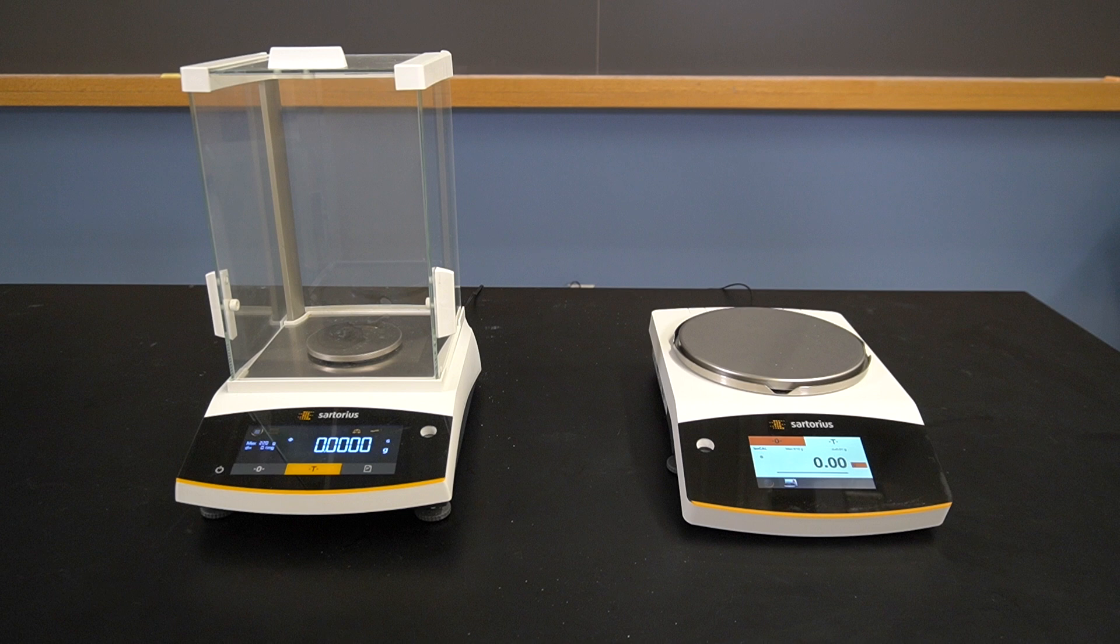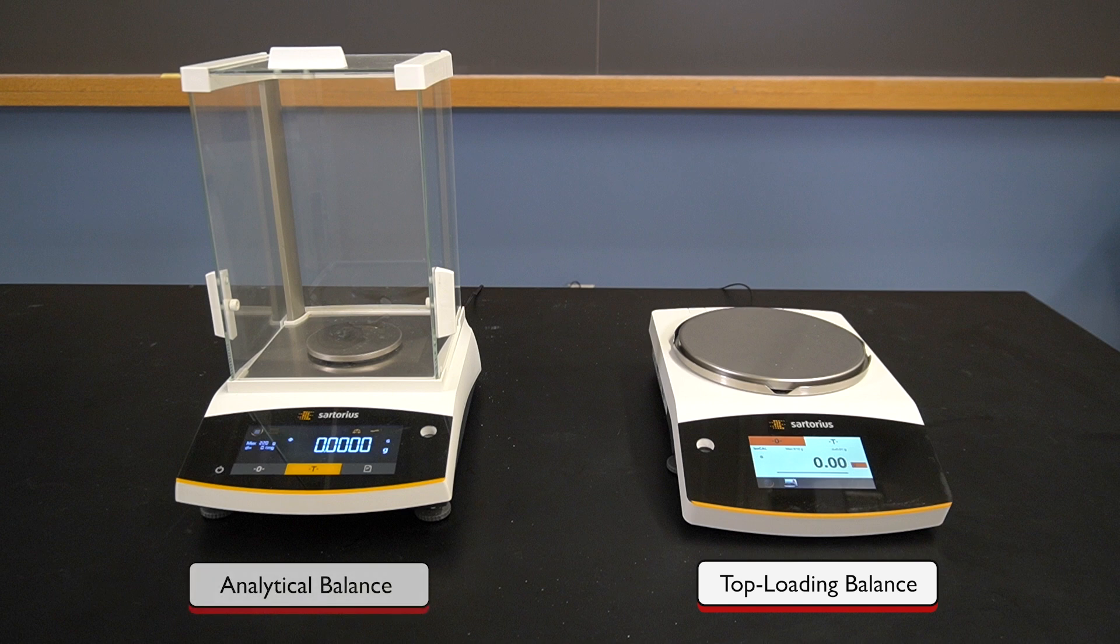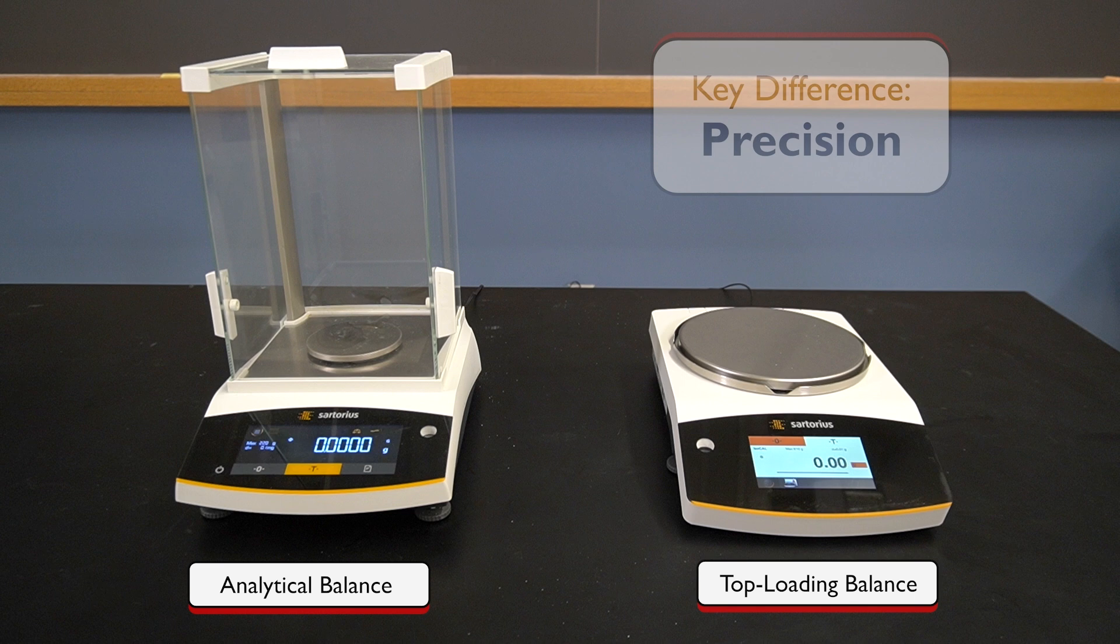We have two types of balances from which to choose, a top-loading balance and an analytical balance. The key difference between these two types of balances is the precision of the measurement that we can make with them.